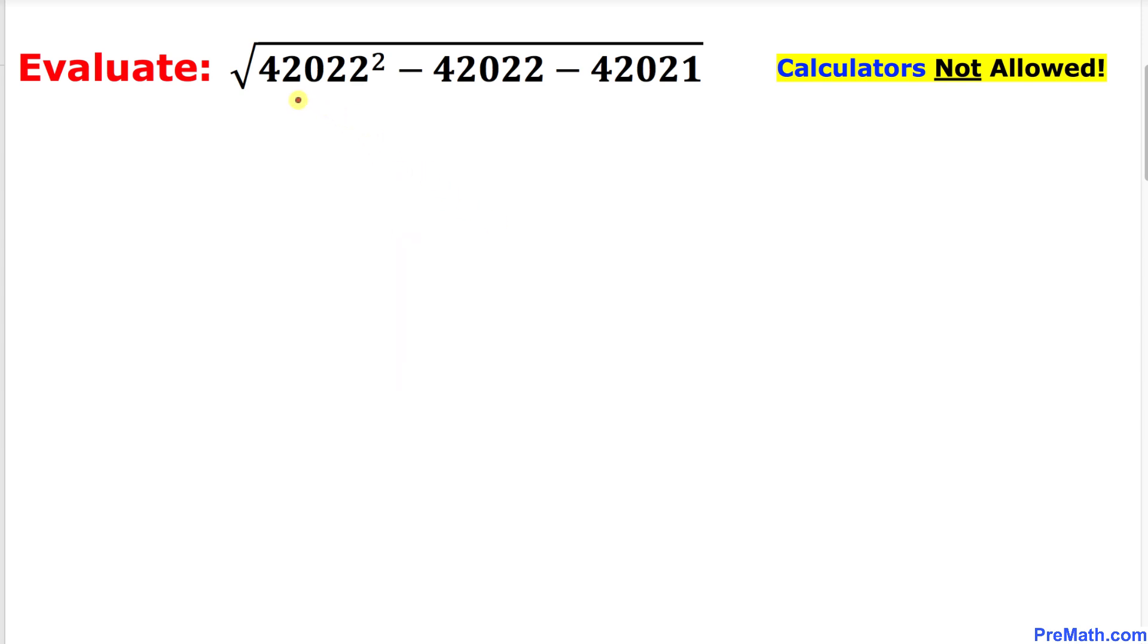So let's go ahead and get started with the solution. As we can observe this problem, we have this 42022 - this number and this number 42022 are exactly the same number. However, this next number is one less than this previous number.